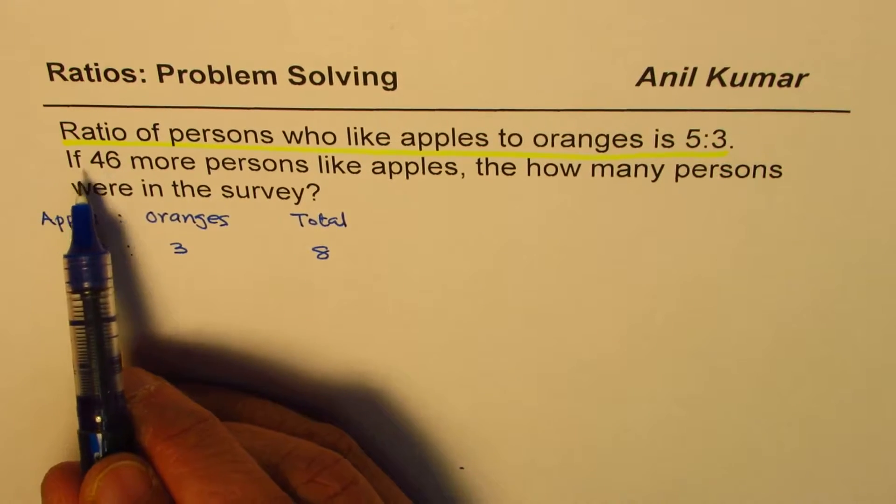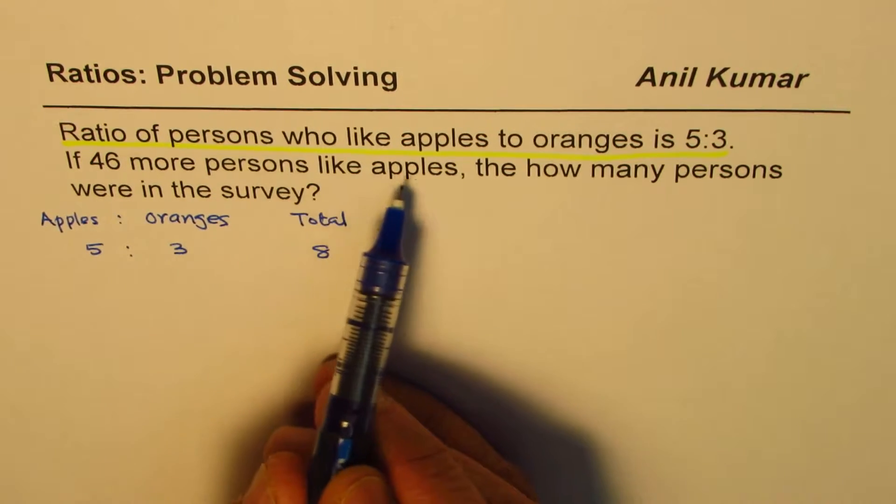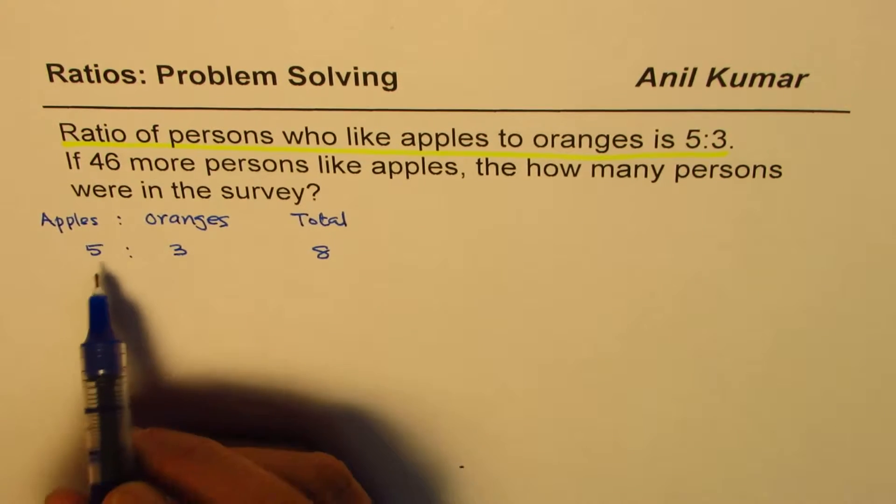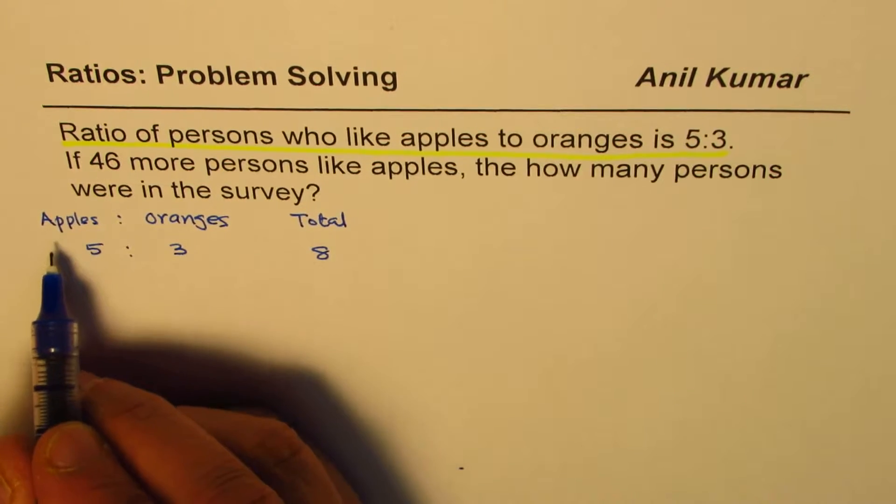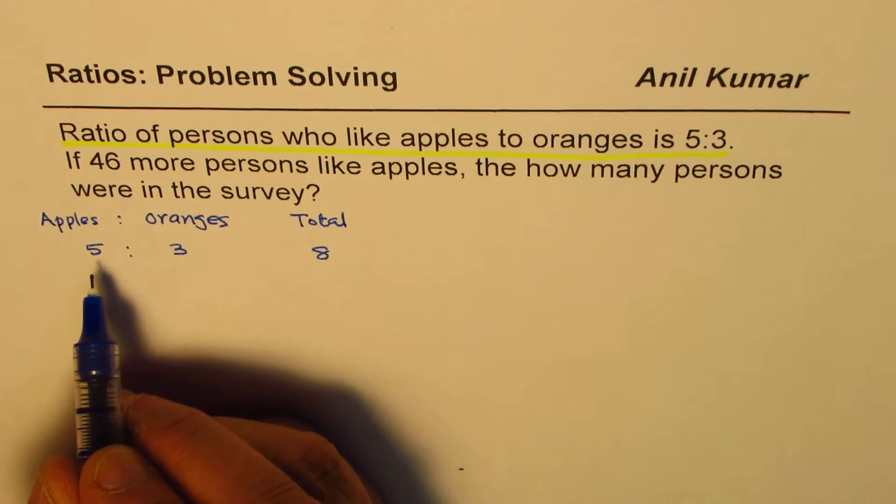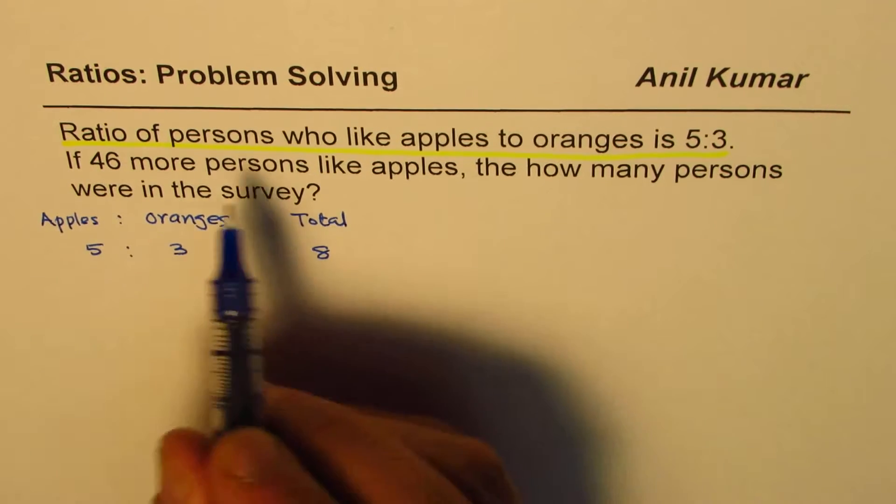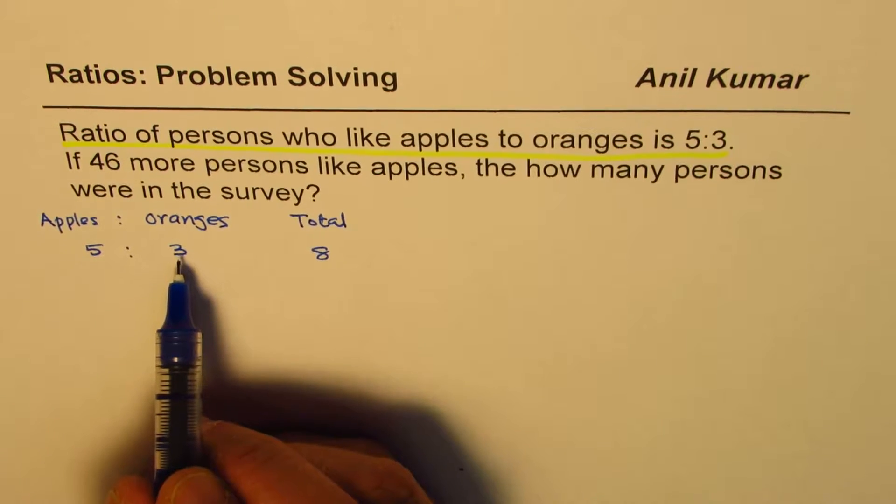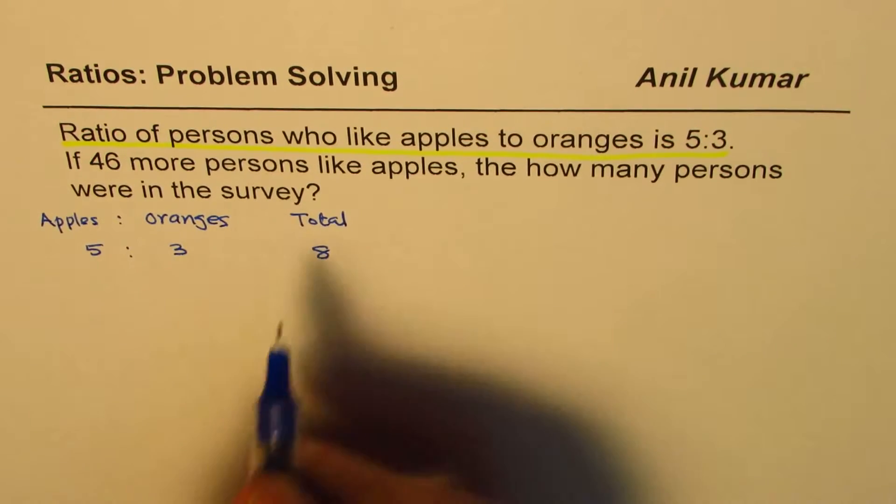Now the question is, if 46 more persons like apples, for example, if the number of apples is 46 more, that means this result is 46 more than the oranges result, then how many persons were in the survey.